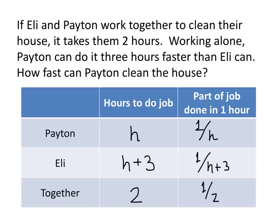When they work together, they combine the work that they do. So Payton's work per hour plus Eli's work per hour must equal one-half, and that gives us an equation to solve.